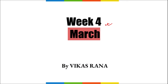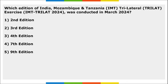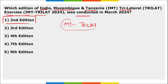In this video we'll discuss important current affairs for the fourth week of March. The first question: which edition of the India-Mozambique-Tanzania trilateral exercise, IMT Trilat, was held recently? This was the second edition of the IMT Trilat exercise. IMT stands for India, Mozambique, and Tanzania — the three countries involved. It was conducted on 29th of March.